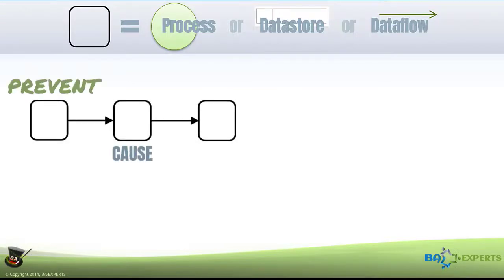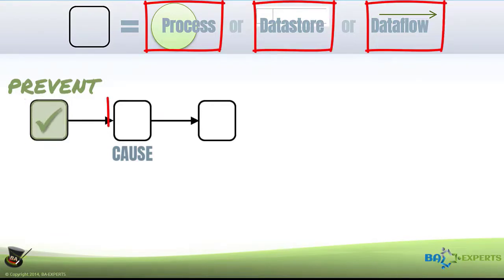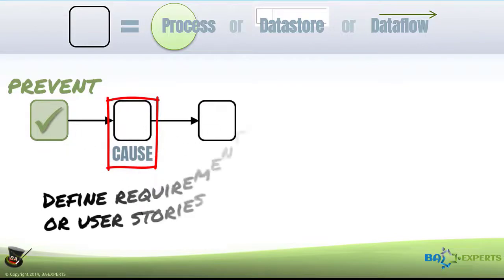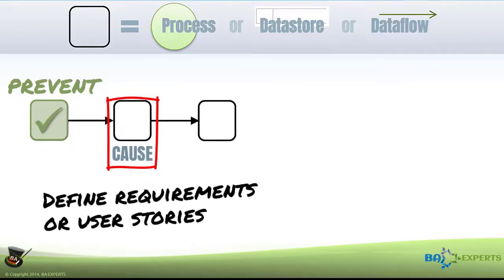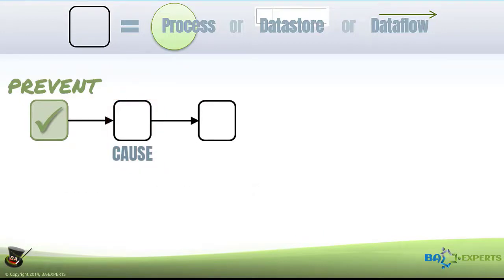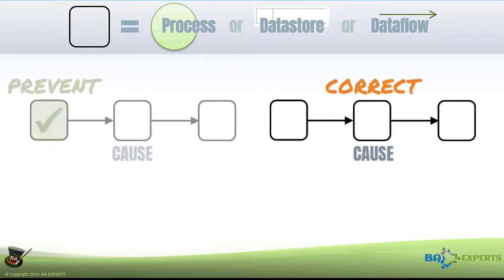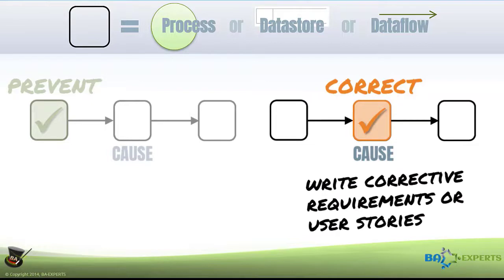First, try to find a way to prevent the problem from happening. You will need to add or change processes, flows, and/or data stores that precede where the problem is observed. Your requirements specify how to recognize the situation and handle it before it becomes a problem. If you can't figure out how to prevent it, write a requirement for how you can correct it when it happens. This implies changes inside the process where the problem is observed. Ideally, that process should automatically detect the problem's situation and normalize it. Corrective requirements are reflected in the detailed description of the impacted process.